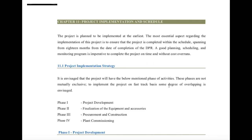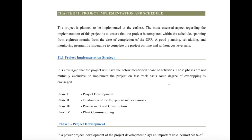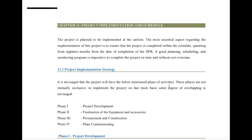Another important part is the project implementation schedule. Once the design is finalized, we need to give a schedule of procurement, installation, construction, and ultimately plant commissioning. We divide the project into four phases: project development consisting of site survey and the DPR, component finalization and budget approval, then procurement and construction timeline, and finally commissioning.